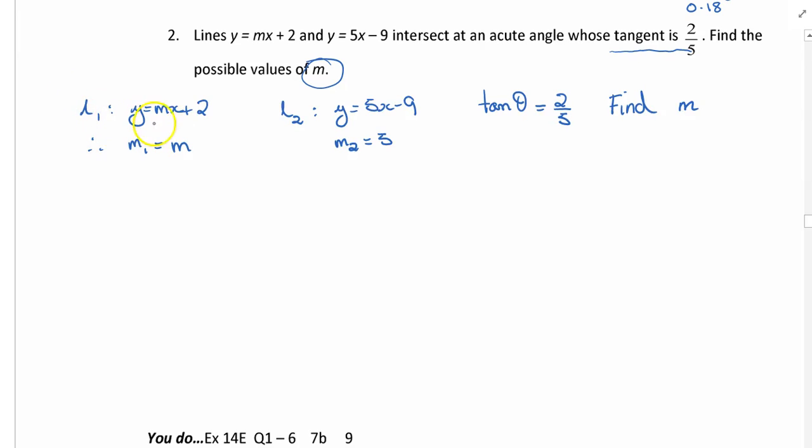I'm going to pause the video, write that up, and then come back and talk about it. So there we have it. Line one in that form, and we've got that the gradient would be m. Line two, the gradient would be 5. We know that the tan of the angle is 2/5; we're finding the gradient. The fact that I've started off with m₁ and m₂ means I've already made the connection to the formula.